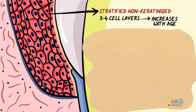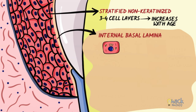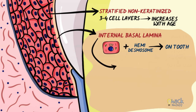The junctional epithelium is attached to the tooth surface by means of an internal basal lamina, composed of cells of the junctional epithelium attaching to the tooth with hemidesmosomes. This is similar to the hemidesmosomal junction between cells and connective tissue elsewhere in the body, but is unique as cells here adhere to a calcified surface.